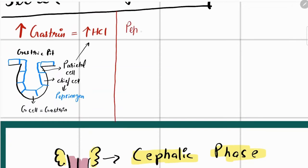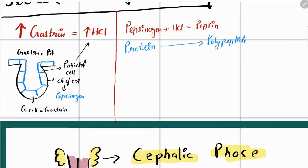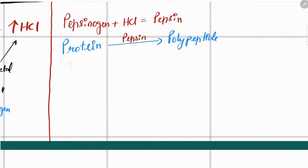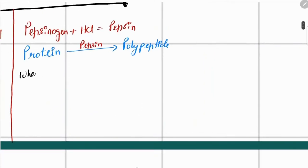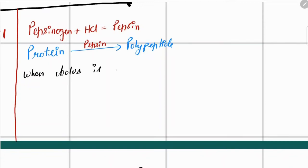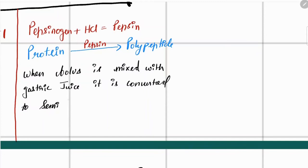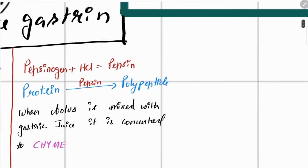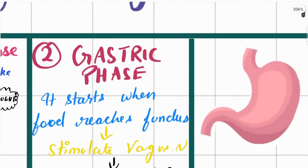Inside your stomach, pepsinogen is converted into pepsin when it is mixed with HCl. Pepsin helps in the chemical digestion of protein, breaking protein down into polypeptides. When bolus is mixed with gastric juice, it is converted into a semi-solid substance known as chyme.